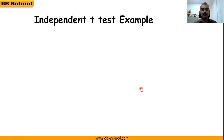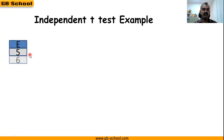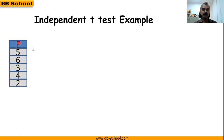Let's go with an example. We have two groups. The first is the experimental group with observations: 5, 6, 3, 4, 2 — so five members in the experimental group.